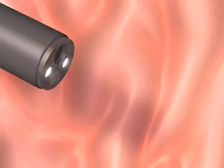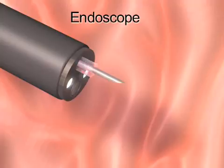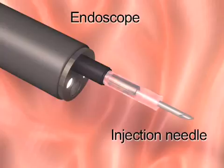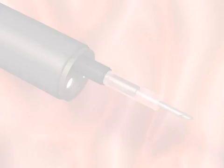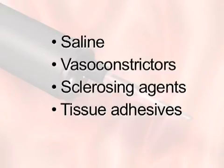In injection therapy, a 25-gauge injector sclerotherapy needle is passed through the working channel of a large, single-channel or double-channel therapeutic endoscope. Injection mediums consist of saline, vasoconstrictors, sclerosing agents, tissue adhesives, or a combination of these.